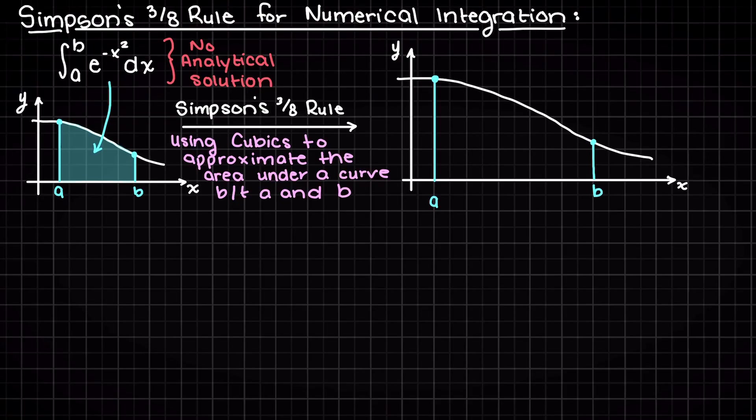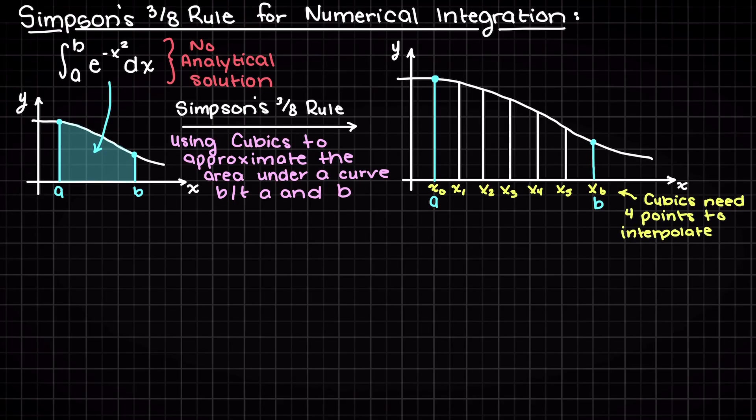The first thing we are going to do is divide up our area of interest into a multiple of three segments. This is the first difference we will notice from the other numerical integration techniques that we talked about previously. The reason our subsection needs to be a multiple of three is such that we can fit a cubic polynomial as Simpson's 3/8 rule integrates three subsections at a time.